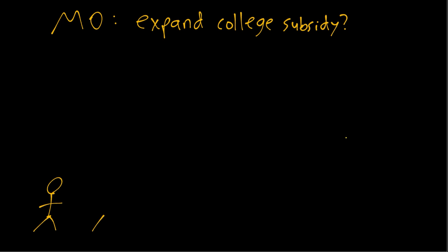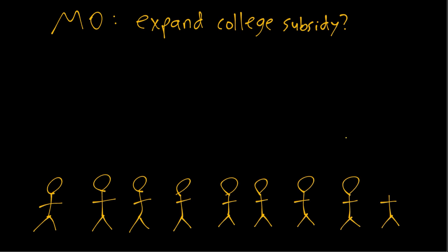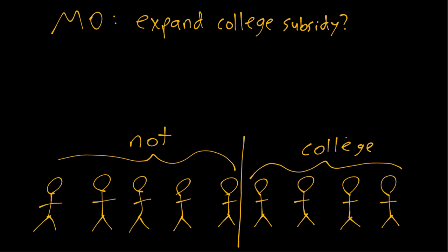Let's imagine we have different individuals in our society here and we line them up based on how likely they are to go to college depending on how much subsidy there is. So maybe currently this is the dividing line where people on the right do end up going to college and the people on the left currently do not.